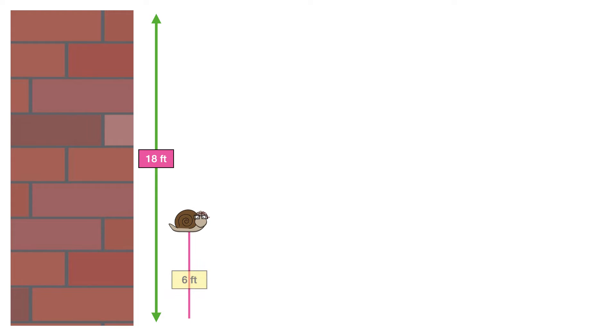So on the first day the snail climbs up six feet and slips down two feet while sleeping. So next morning it is four feet from where it started. The snail thus travels four feet upwards every day. Therefore in three days it has travelled a distance of twelve feet from the bottom.